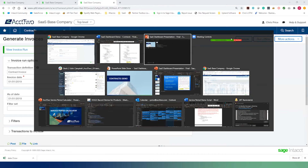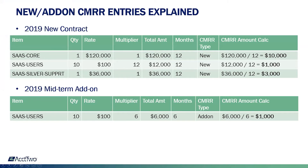Let's look at what we're expecting to happen as a result of this new contract. The SaaS core application was quantity one at $120,000 for one year — 12 months. The system will automatically identify this as a new customer and divide $120,000 by 12 months to compute $10,000 of CMRR for the SaaS core product. For SaaS users — 10 users at $100 per user per month for 12 months — it takes the $12,000 divided by 12 to compute $1,000 CMRR. For silver support, it takes $36,000 divided by 12 to compute $3,000 CMRR.